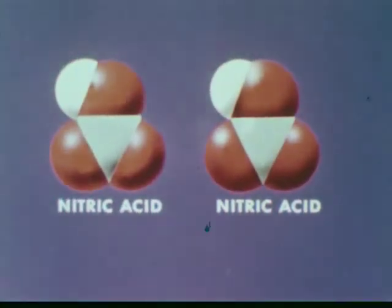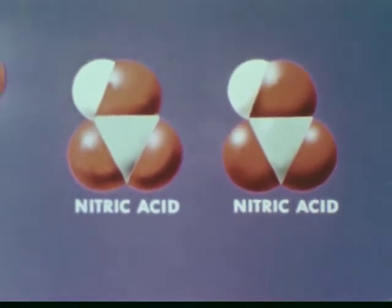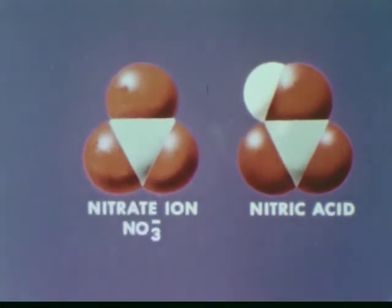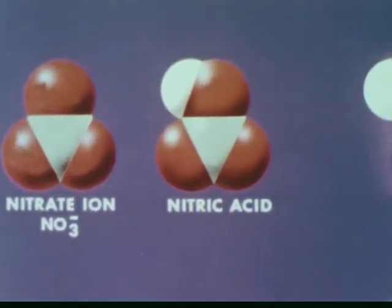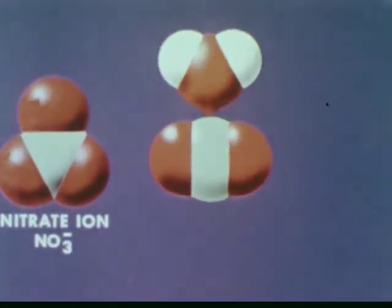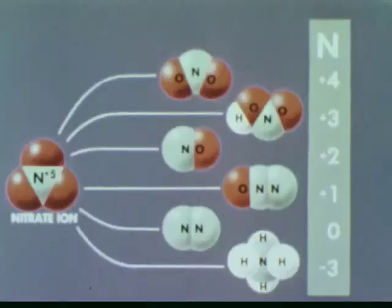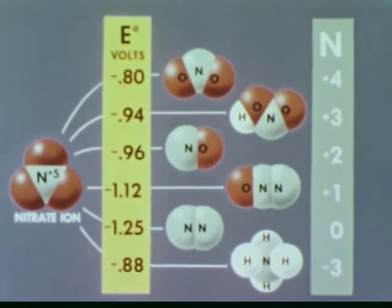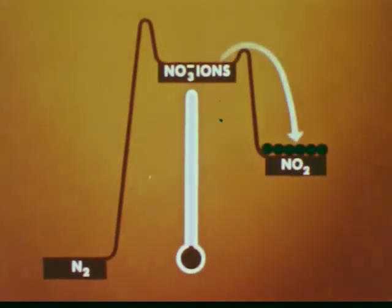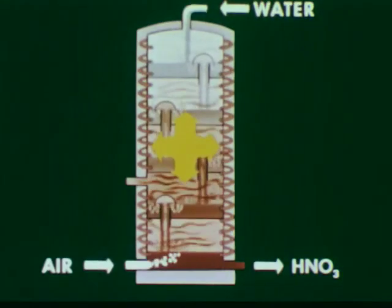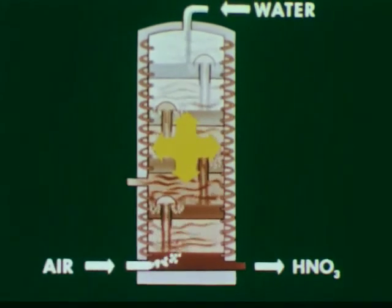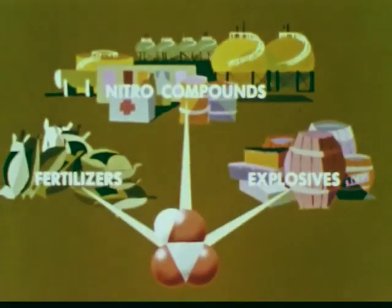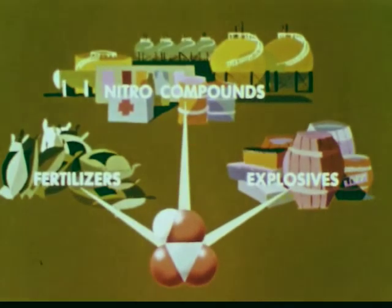We have seen that nitric acid can act either as an acid or as a base. Acting as an acid, nitric acid donates its proton to a base and forms the nitrate ion. Acting as a base, nitric acid accepts a proton from a stronger acid, splits out water, and forms the nitronium ion. As an oxidizing agent, the nitrate ion can be used in a wide variety of oxidations; these vary considerably in reaction rates, though all have large E0 values. Controlling the temperature helps control the product. The application of Le Chatelier's principle allows us to control the equilibrium yield. Thus, through a knowledge of fundamental principles, we can understand and control the complex processes in which we produce and use nitric acid.